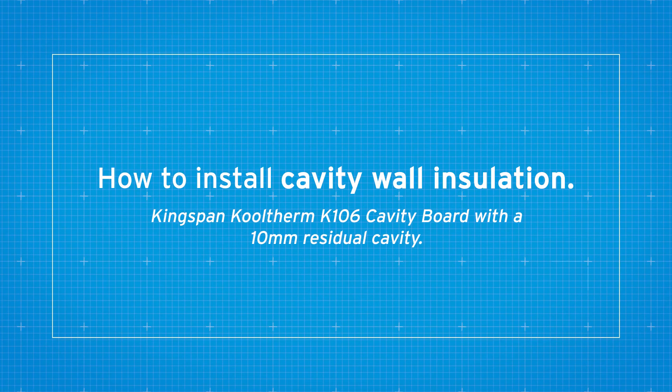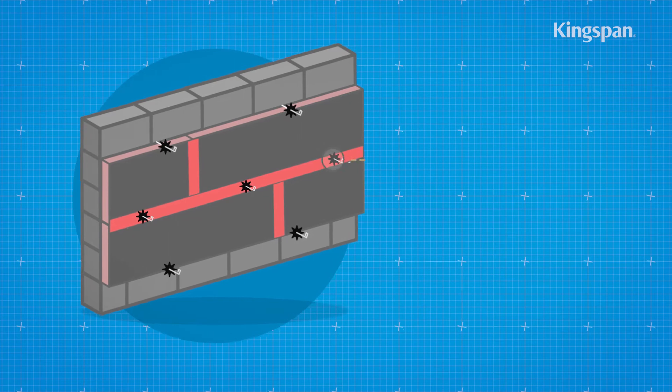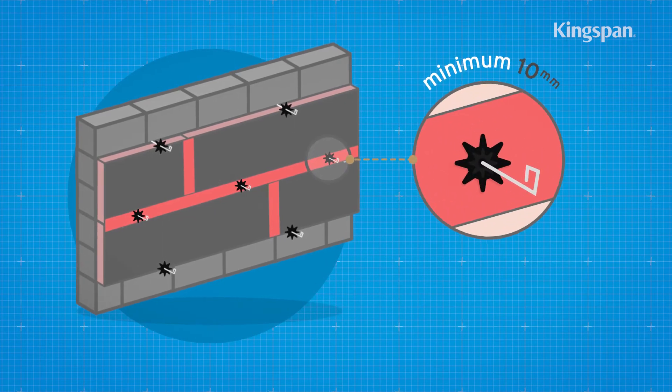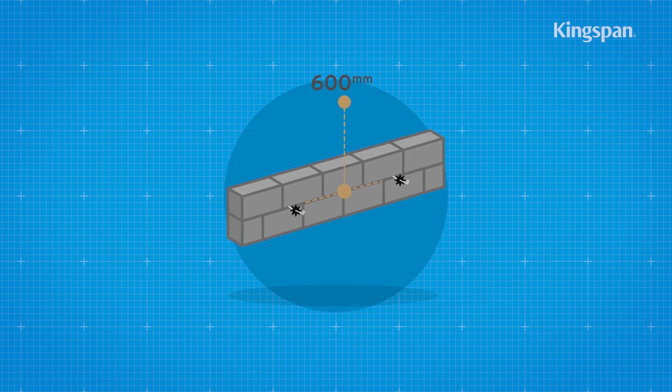How to install cavity wall insulation. Cavity wall insulation is normally held in position by the wall ties used to tie the two skins of masonry together. Install wall ties in the inner leaf at 600 mm horizontal centers.